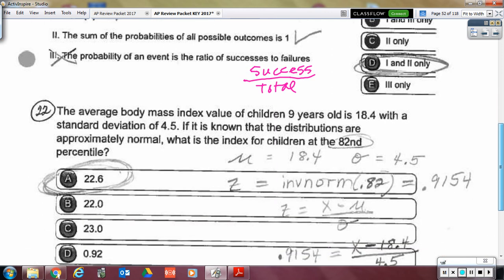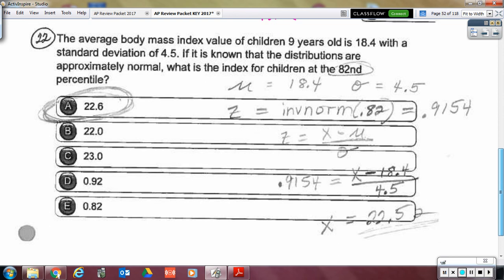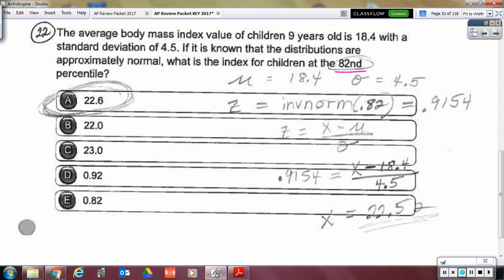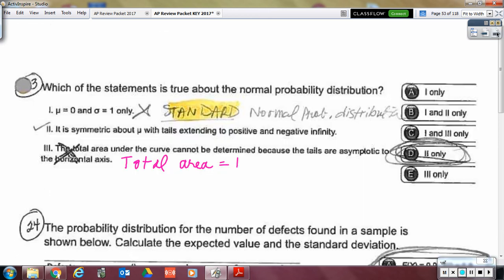And here was another normal curve probability problem. Knowing that 82nd percentile is the area below. So inverse norm of the 0.82 is the Z at that spot. And then you set that up with your Z score formula and solve for X.